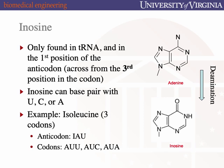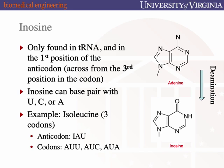Inosine arises from a specific deamination event — a base deamination that occurs in our cells. A ribonucleic acid base gets deaminated to give rise to inosine. Inosine can base-pair very flexibly when in the first position of the anticodon to three different bases. For example, isoleucine has this anticodon — one tRNA will recognize three codons that all have AU but three different bases in the wobble position. All three will be recognized by the same tRNA.